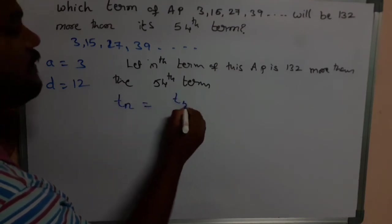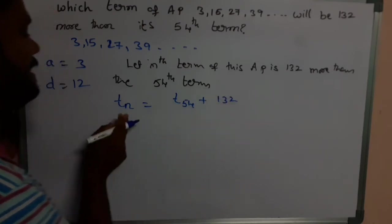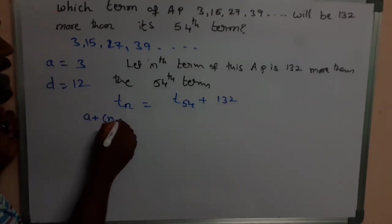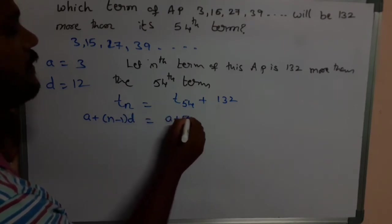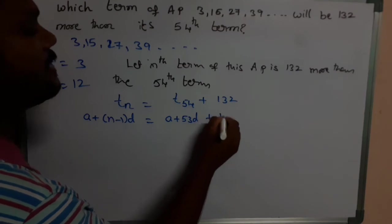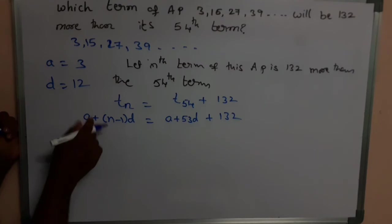Tn is a plus (n minus 1) into d, which is equal to a plus 53 into d plus 132. Now on taking this, let me substitute a and d values in this.